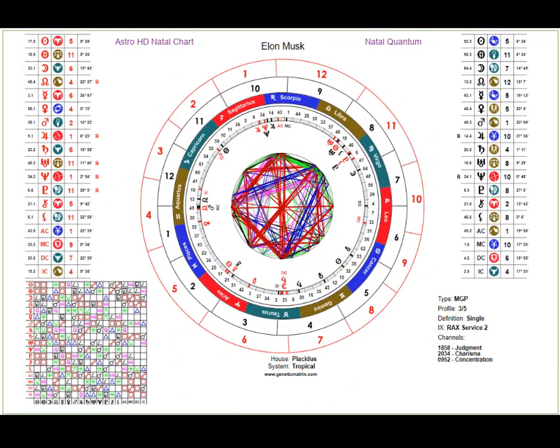In keeping with the heresy that is Genetic Matrix and our willingness to provide you what you would like to see in terms of the display of information, we created a family of astrology charts that also synthesize relevant human design information. This is what Astro HD means — it's a combination of astrology and human design.